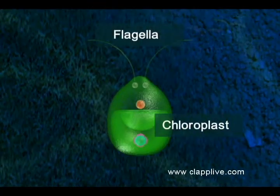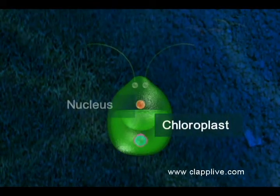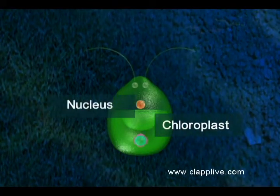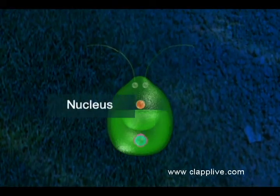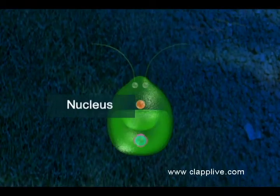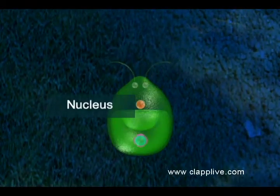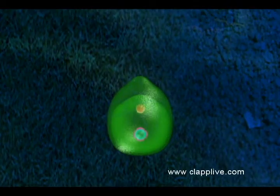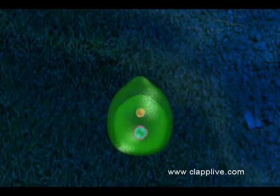Asexual reproduction occurs in Chlamydomonas during favourable conditions. During this process, the two flagella are retracted into the cell and the organism transforms into a zoosporangia.